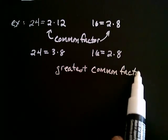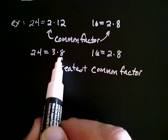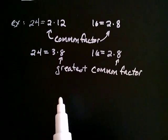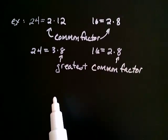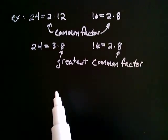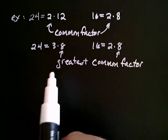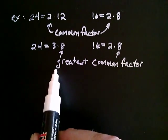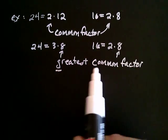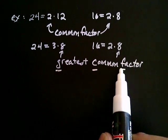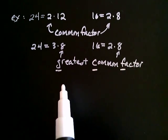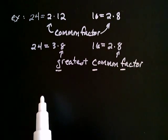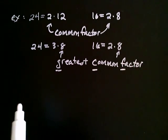So the greatest common factor would be 8. Not only is it a common factor, it's the largest common factor — or the greatest, if you will. The greatest common factor is often abbreviated with the letters G, C, F. So if somebody asks you to find the GCF, they're asking you to find the greatest common factor.